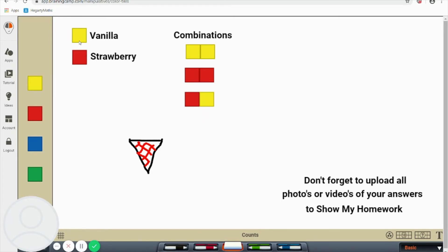So with two flavours of ice cream, the maximum number of combinations there are is three. So your challenge this week is if I was to add in a bubblegum flavoured ice cream, what's the maximum number of combinations you could get with three flavours of ice cream and two scoops? And if I was to add in maybe a fourth flavour, let's say mint, how many combinations could I have with four flavours and two scoops?